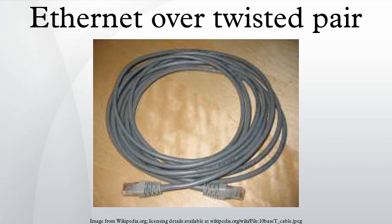10BASE-T and 100BASE-TX only require two pairs to operate. Since Category 5 cable has four pairs, it is possible, but not necessarily standards compliant, to use the spare pairs in 10 and 100 Mbit/s configurations. The spare pairs may be used for Power over Ethernet, two phone lines, or a second 10BASE-T or 100BASE-TX connection.